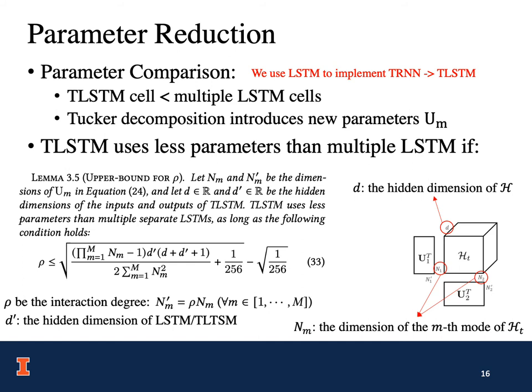Although it is obvious that TLSTM uses fewer parameters than multiple individual LSTMs, the Tucker Decomposition introduces new parameters U_m. It can be proven that TLSTM uses fewer parameters than multiple LSTMs if the following lemma is satisfied, where rho is the interaction degree, d-prime is the hidden dimension of LSTM or TLSTM, d is the hidden dimension of H, and m is the dimension of the m-th mode of H.